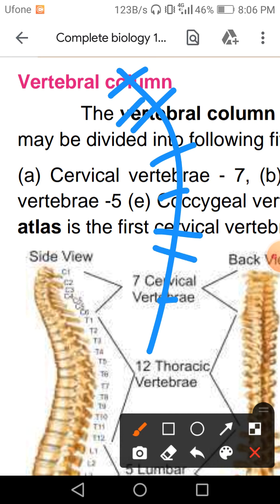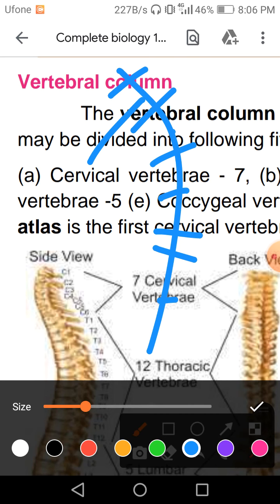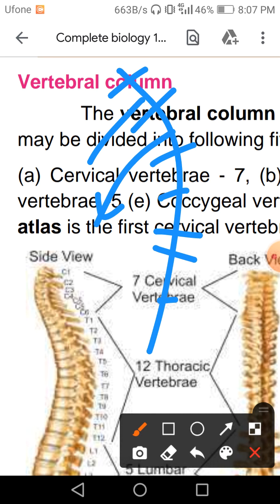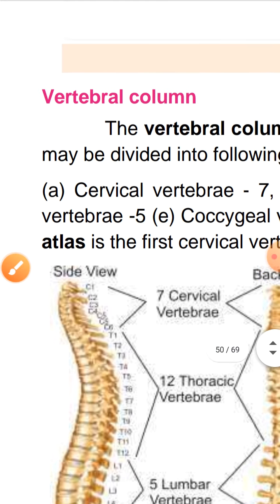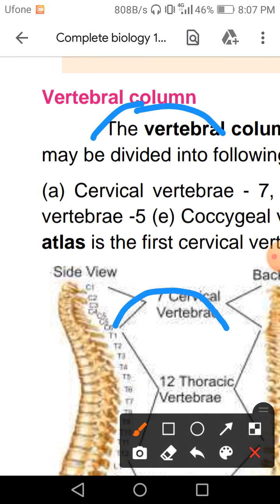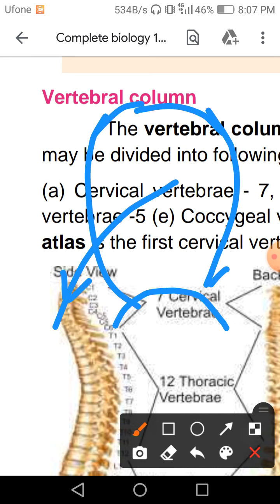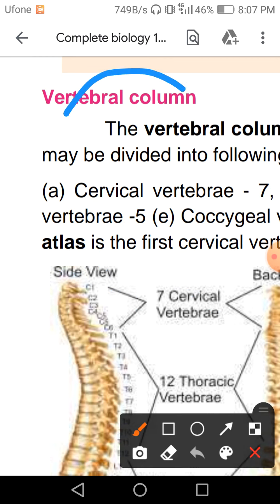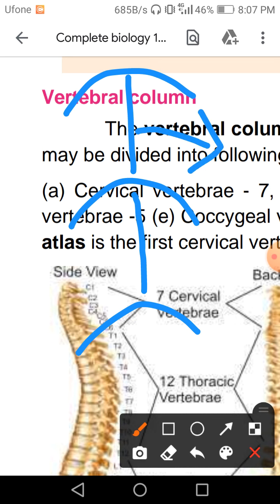Between each of the 7 cervical vertebrae there is a joint. They are interconnected by a structure called intervertebral discs. Each vertebra is attached to the next by a disc — a cartilaginous disc. Cartilage is also part of the skeletal system and is quite soft.